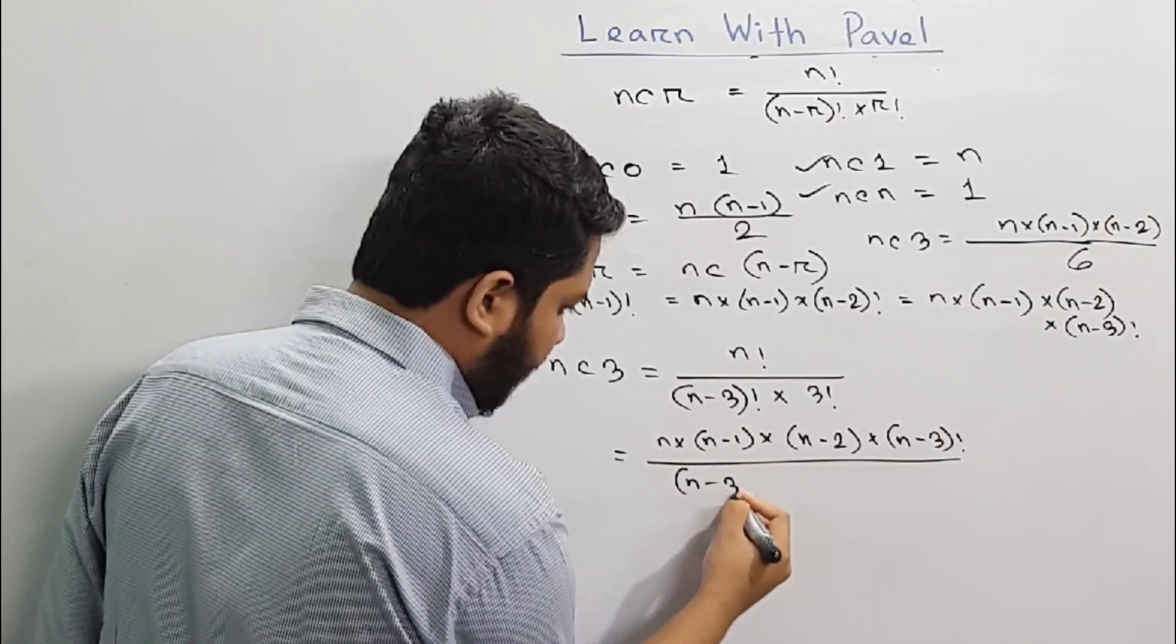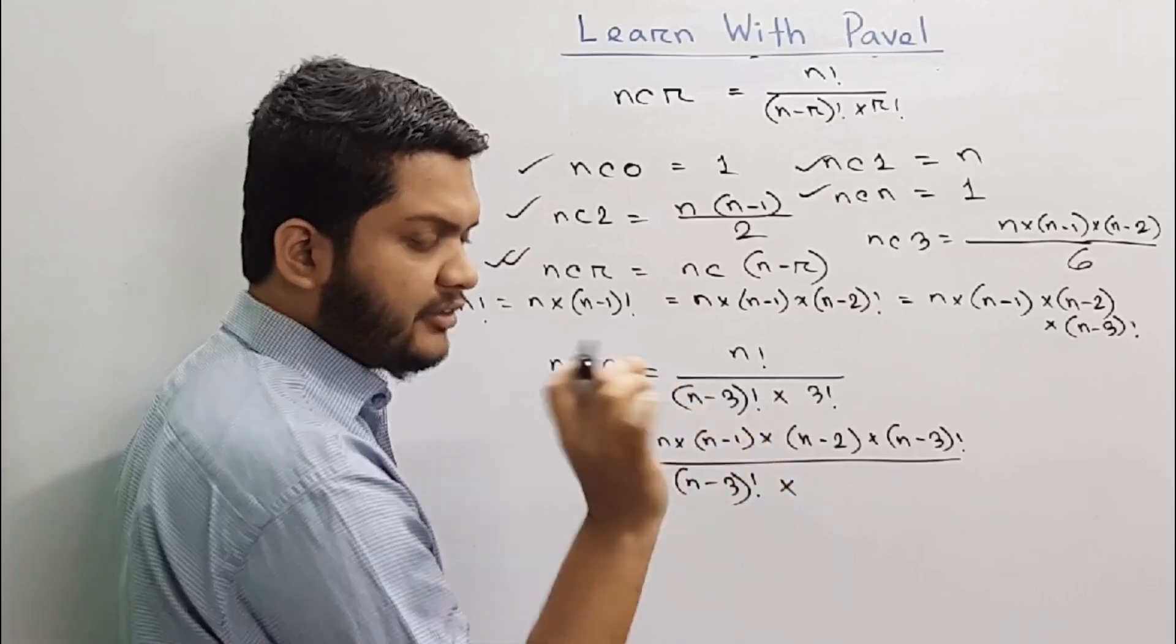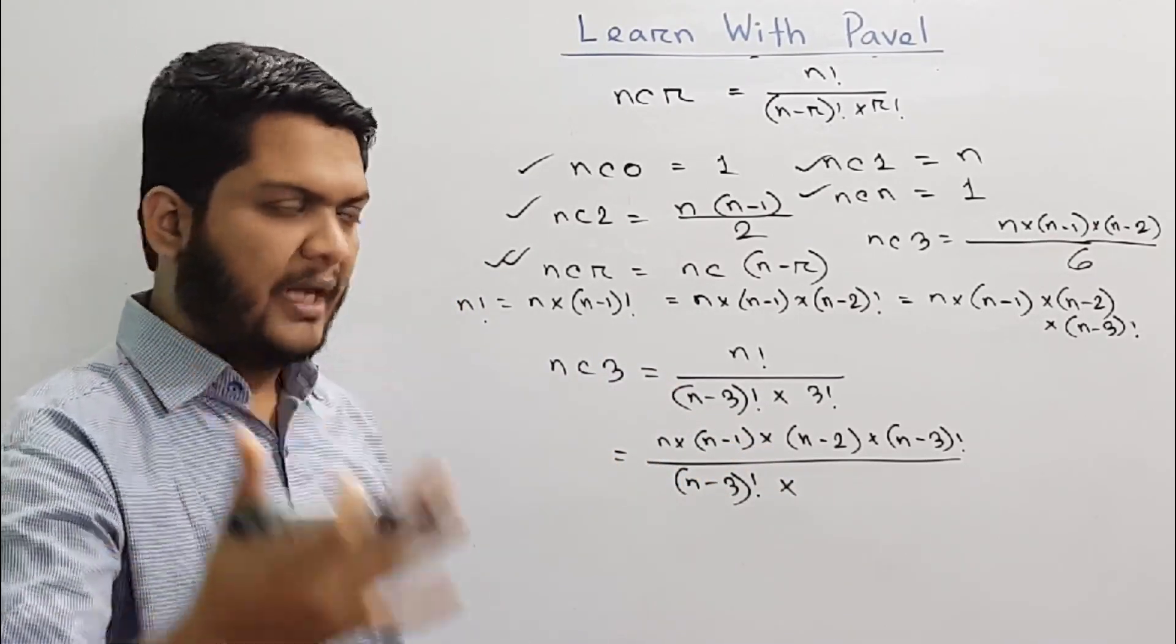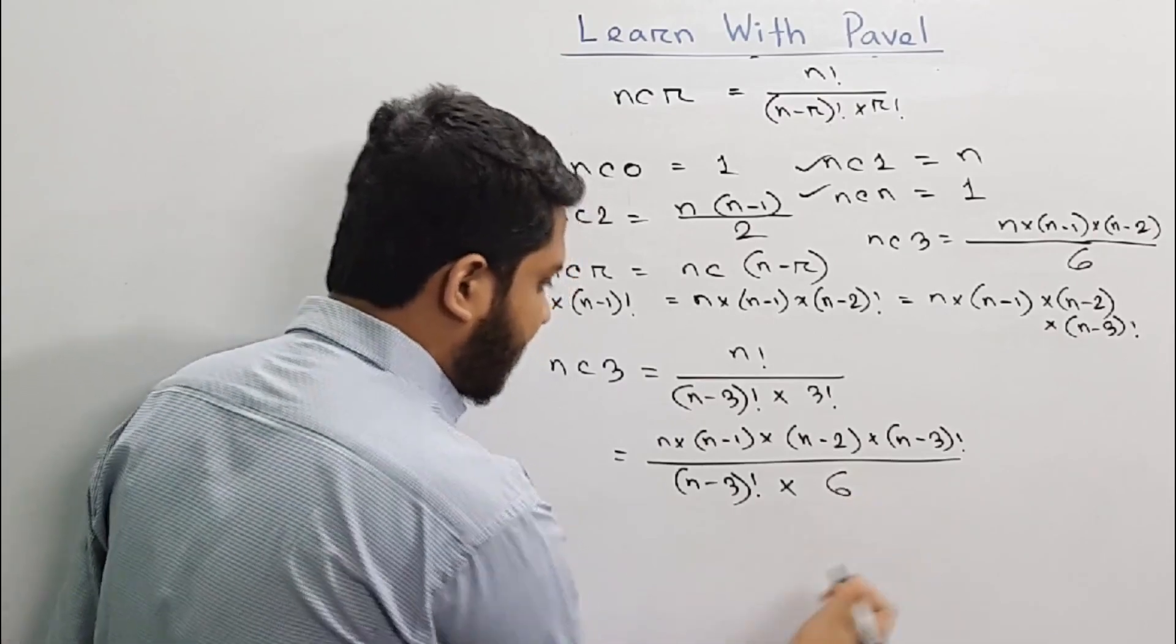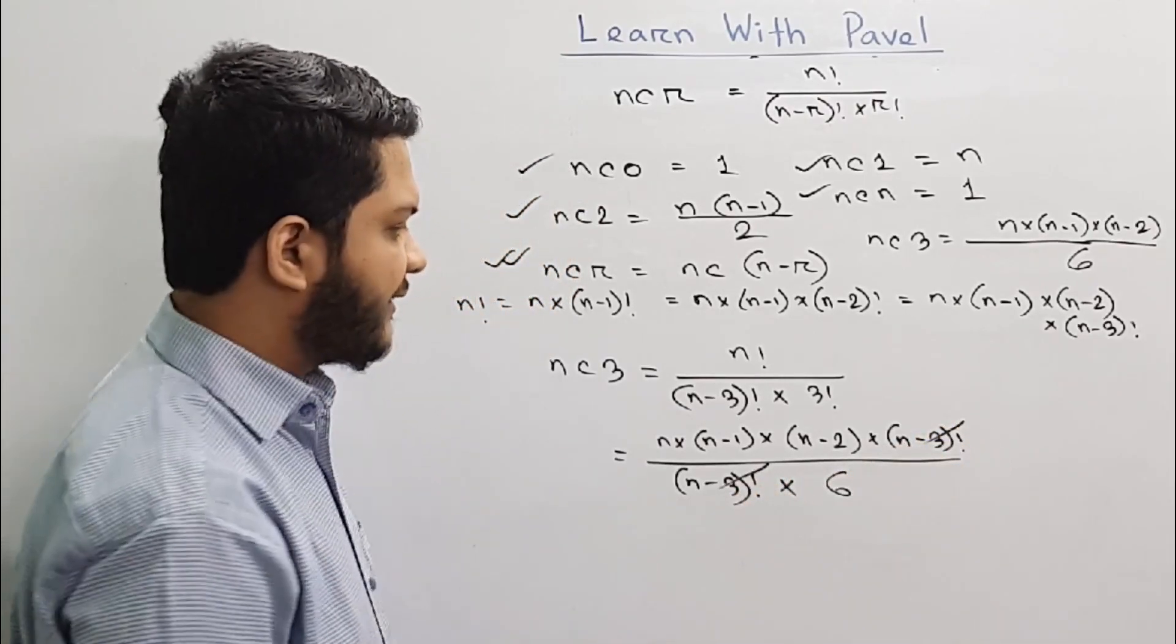This is n minus 3 factorial into 3 factorial. According to this 3 factorial, we have 3 multiplied by 2 multiplied by 1. So this is 6. This is n minus 3 factorial. n minus 3 factorial cancels out.